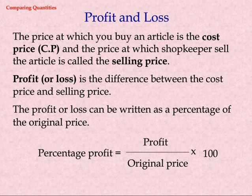The price at which you buy an article is the cost price, and the price at which a shopkeeper sells the article is called the selling price. Profit or loss is the difference between the cost price and selling price.